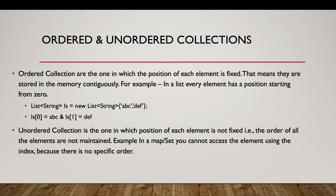Maps are useful when you want to store a key and related data — for example, the key could be an account ID and the value could be all account attributes for that ID. Ordered collections store elements at fixed positions contiguously in memory. For example, in a list initialized with two values, the zeroth element is accessed with ls[0] and the first with ls[1].